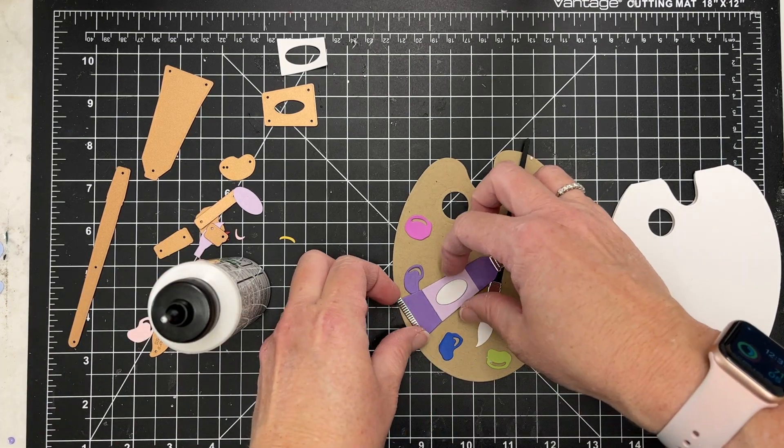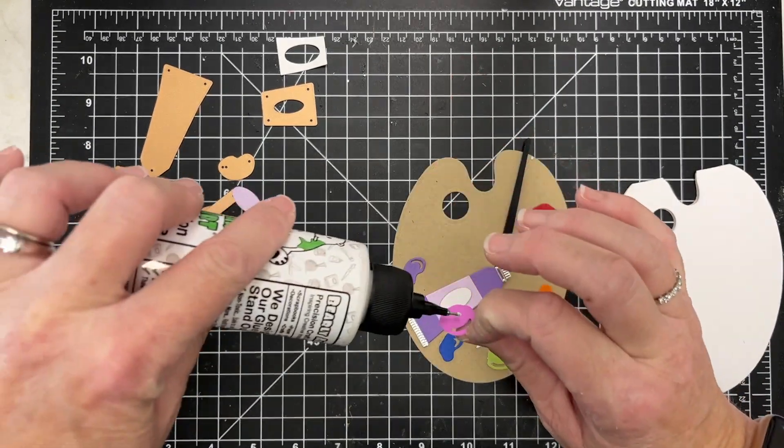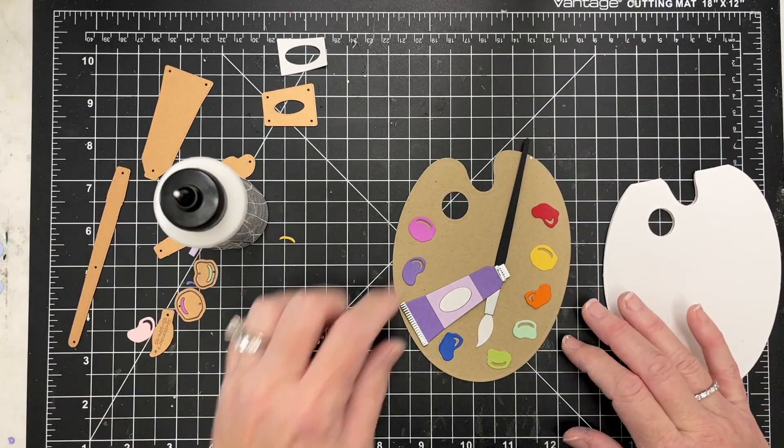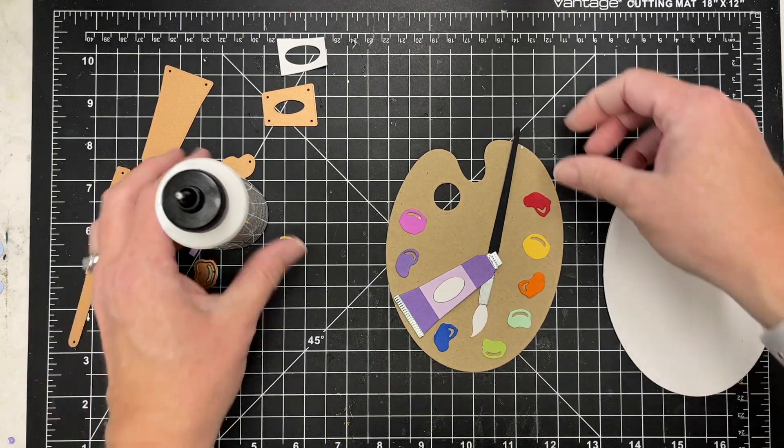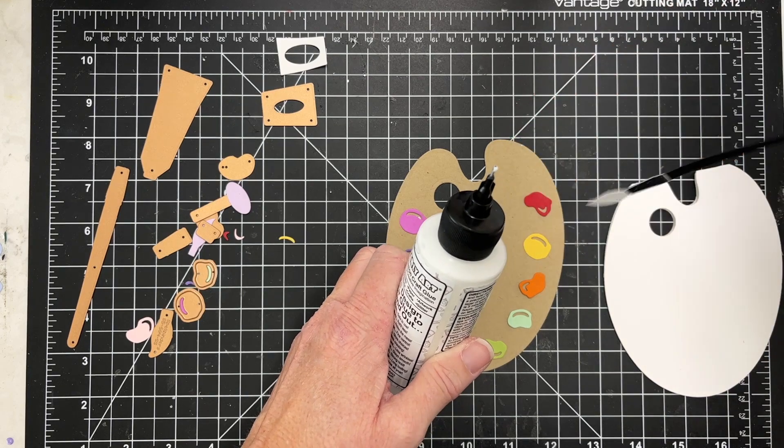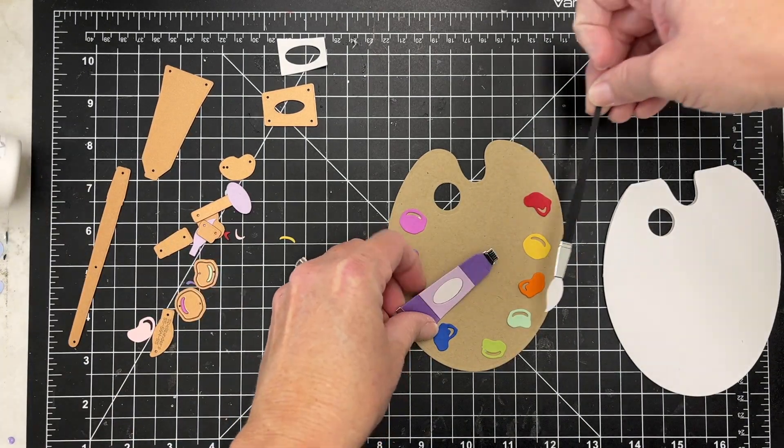So I'm going to glue these last few down and then I'm going to glue my paint brush directly to the paper as well. You could pop this up as well, but the only thing I'm going to pop up is going to be my paint tube. So I'll add my brush down there.